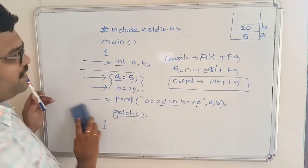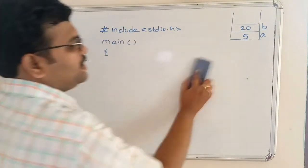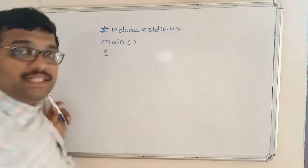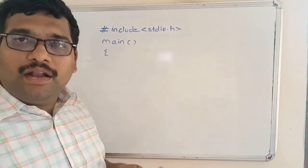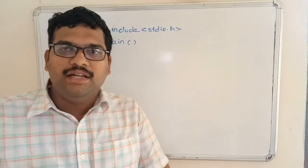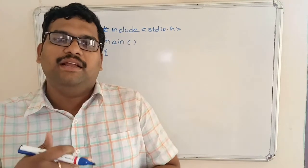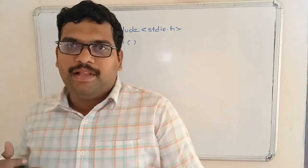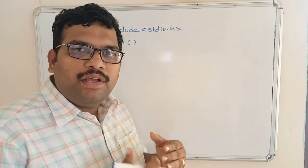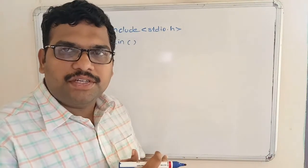One more very important thing in C programming is sequential execution. As seen earlier, C programming is case sensitive, and now we discuss sequential execution. Sequential execution means the execution happens in a sequential manner — first line, then the second line, then the third line — followed by the remaining lines. The value in a variable may also change depending upon the sequence of logic.